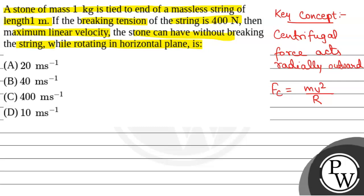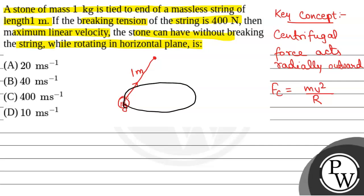We have been given that a stone of mass 1 kg is tied to the end of a massless string of length 1 meter. So this is the string of 1 meter and this is the stone of mass 1 kg. It is rotating in a horizontal plane — this is the horizontal circle. There will be a tension in the string, that is, the breaking tension in the string is 400 N.